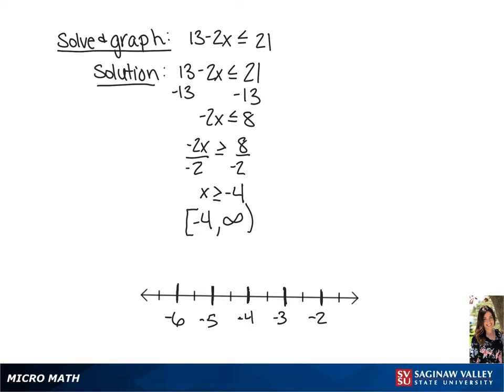Now to graph this, we're going to go down and draw a closed circle around negative 4, and the arrow to positive infinity or to the right.